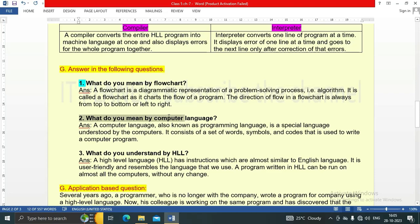Second question: what do you mean by computer language? A computer language, also known as programming language, is a special language understood by the computers. It consists of a set of words, symbols, and codes that is used to write a computer program.